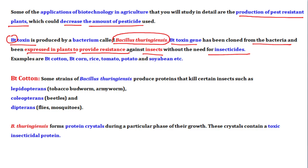The toxic protein causes harm to insects. When the insect eats the plant, the protein reaches its gut — its intestine. The toxic protein, present in the alkaline pH of the gut, forms crystals that bind to the intestinal wall, creating pores which ultimately cause the insect's death.